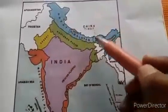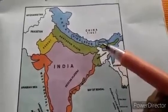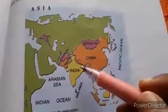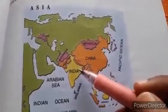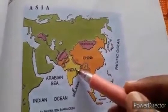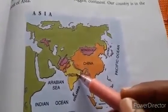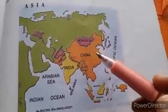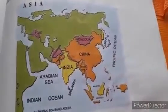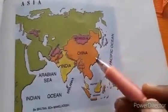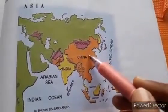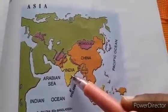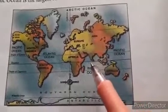Can you see the neighboring countries in the picture? There are many countries in the world. Our India is the second most populated country in the world, with more than 130 crore people living in India. China is the first most populated country in the world. India is also the seventh largest country in the world.